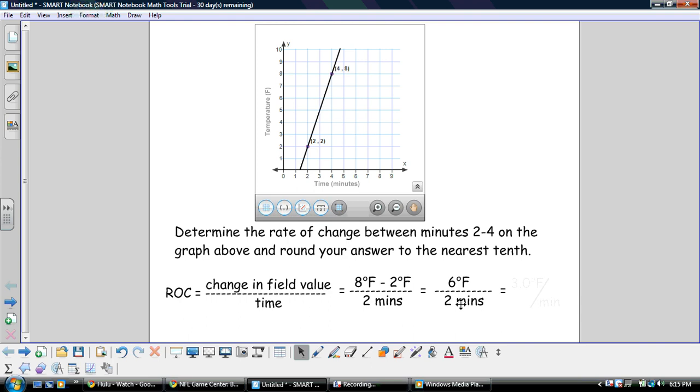So the last step we have to do here is to simply simplify this, and 6 divided by 2 gives us a 3, but we're asked also to give it to the nearest tenth place, so we need to provide a 0 to hold that place. So there's our answer, 3.0 degrees Fahrenheit per minute, and that's it.